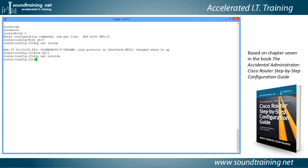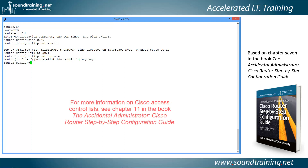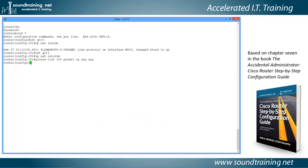Now we've identified the two interfaces for NAT. We create our access control list — a simple extended list — with the command 'access-list 100 permit ip any any'. Access list number 100 tells the router it's an extended list. This permits IP traffic from any source to any destination. You might want to tighten that up for security, but you could specify a subnet or individual node if needed.